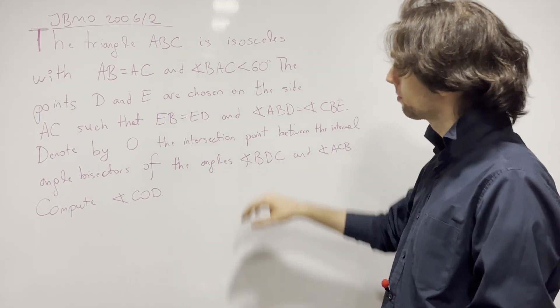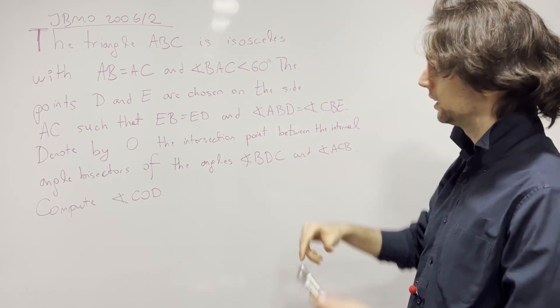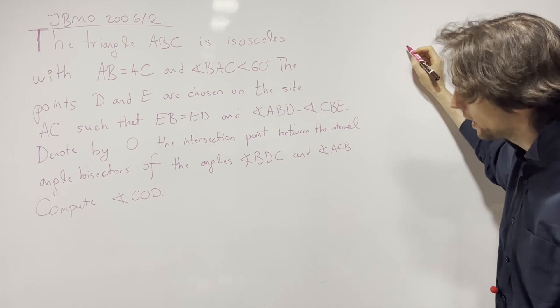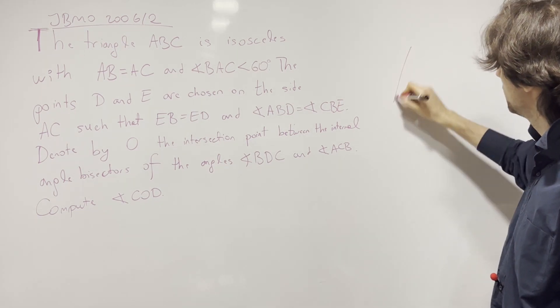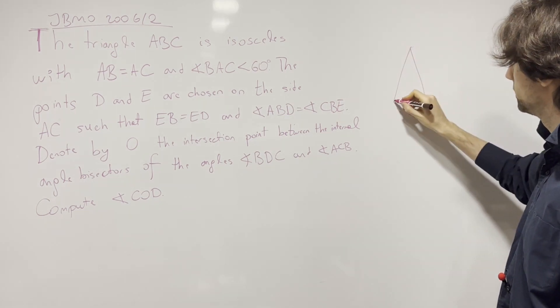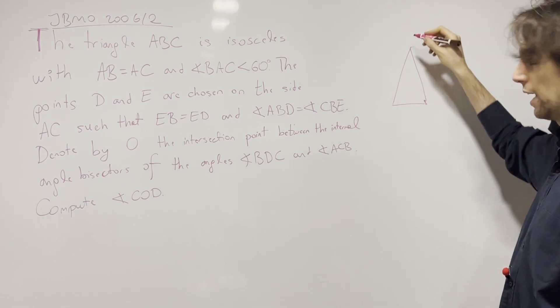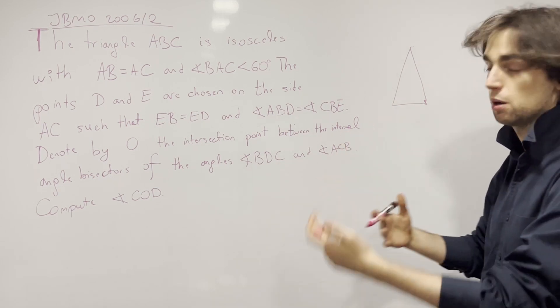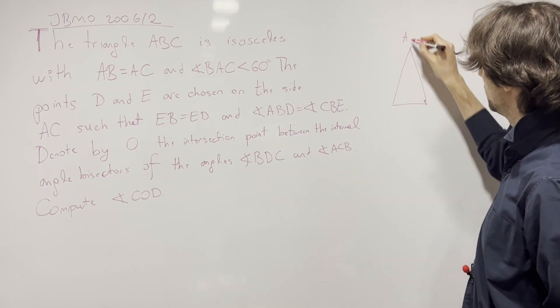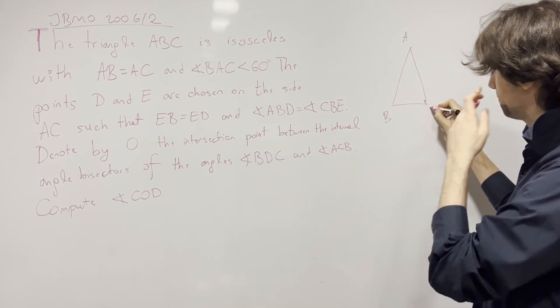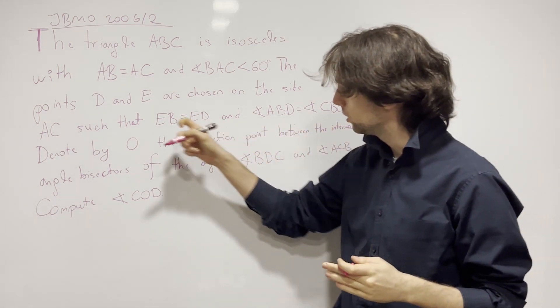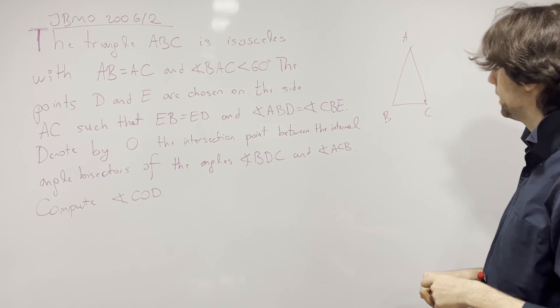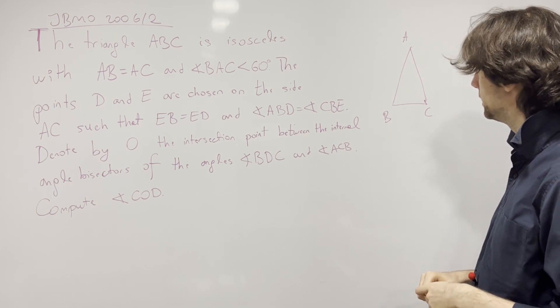So first we have triangle ABC is an isosceles triangle with AB equals AC and angle BAC is less than 60 degrees. So we have our first diagram is not going to be particularly beautiful. We're just trying to see what the problem is really about in this first one.